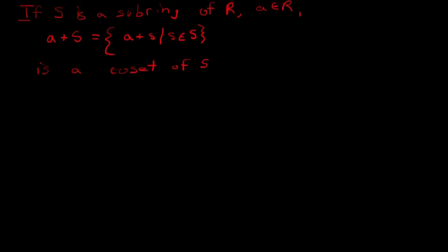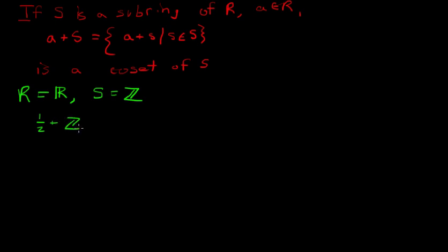Let's see a couple examples. Say our ring is the real numbers and our subring S is the integers. Let's pick A = one half. So we have one half plus ℤ, and this would be a coset of ℤ. It is the set: ..., negative one half, positive one half, three halves, and so on. That is one particular coset of the integers.